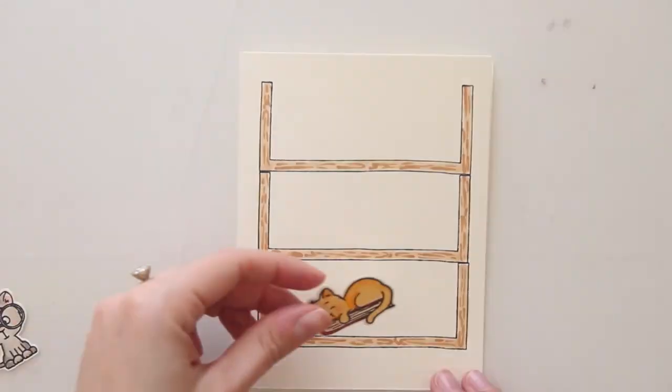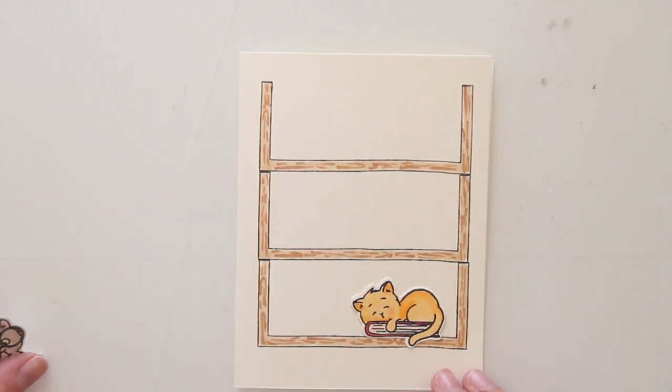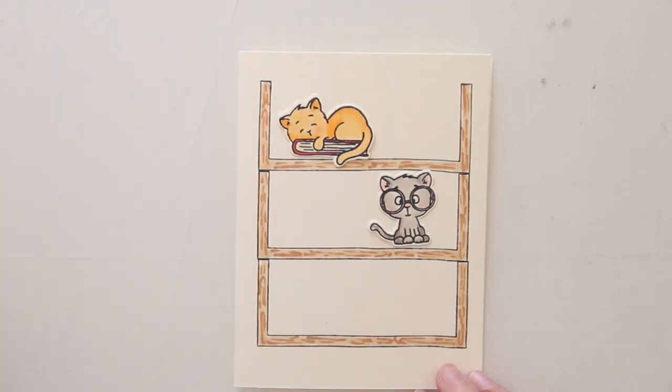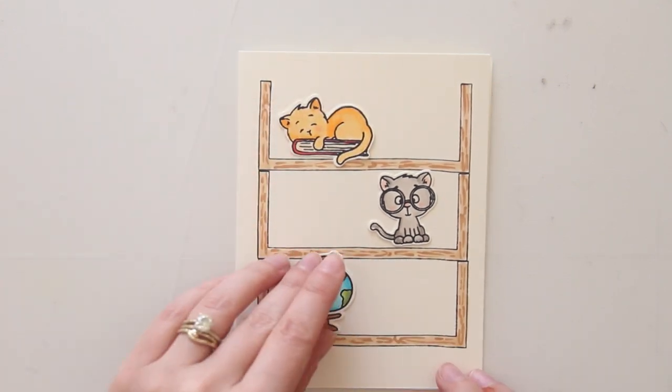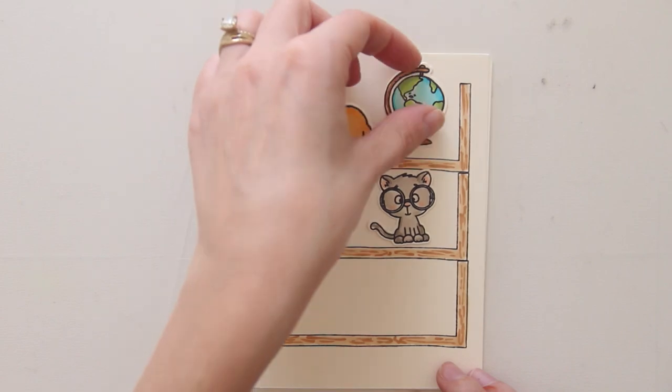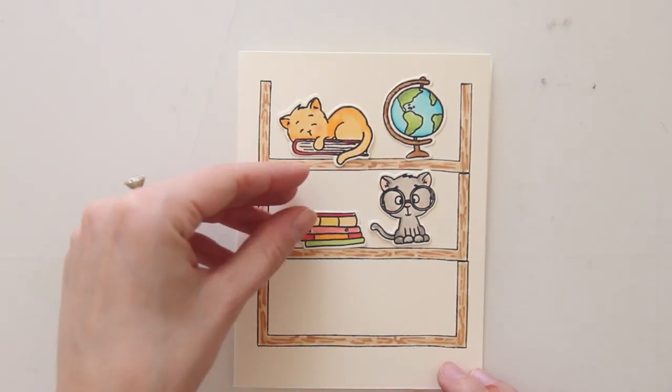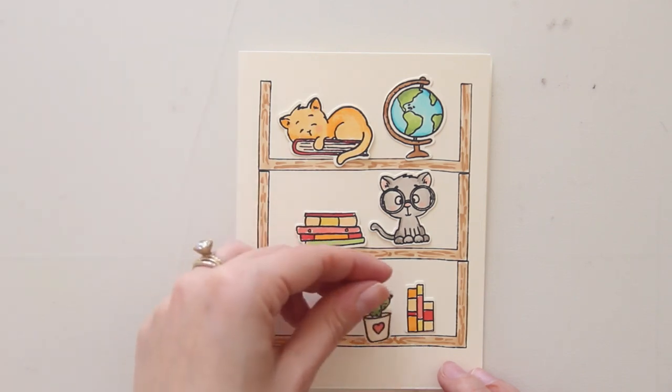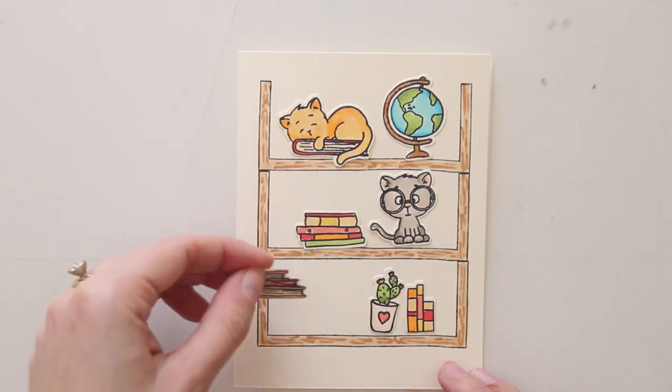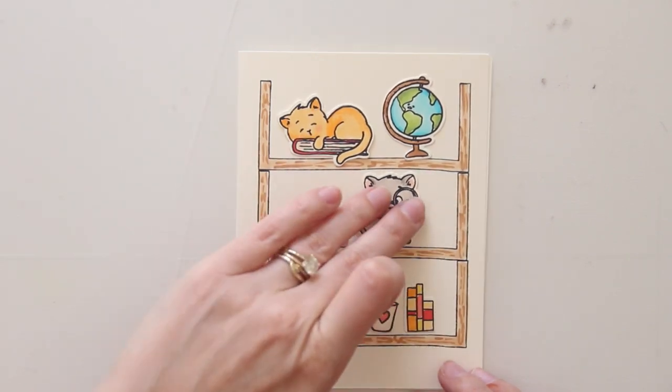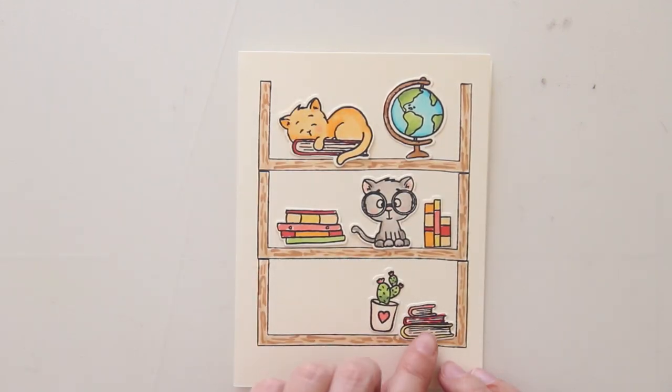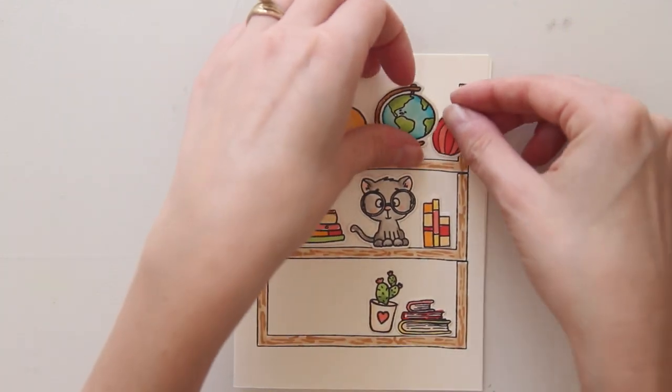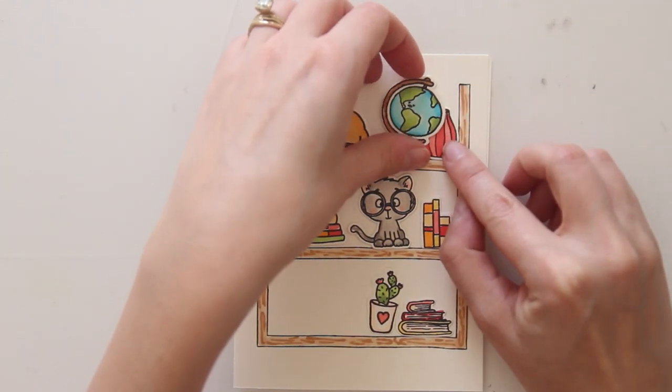Now I'm taking all of the individual stamped and die cut pieces that I colored and just kind of figuring out where on the bookshelf they'll all work. Like for example, the globe I knew was too tall to fit on one of the second or third shelves so that had to go on top, and then I wanted the cats to be on separate shelves so that kind of dictated where I was going to put the different elements. And then I also knew I wanted to put a sentiment on one of the shelves so that was going to force me to leave some room on that bottom left side of the bottom shelf.